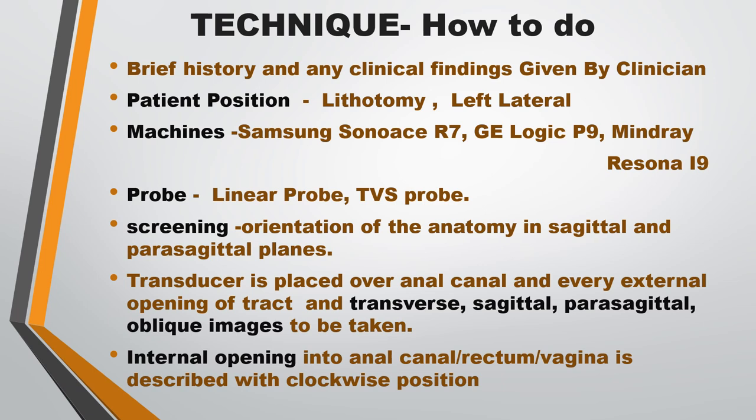How to perform perineal ultrasound: first, take a history from the patient and note symptoms. Then look for any clinical findings provided by the clinician. The most common positions are lithotomy and left lateral. The probes used are linear probes and TVS probes. Most commonly, linear probes are used first, followed by transvaginal probes for sagittal and axial images.